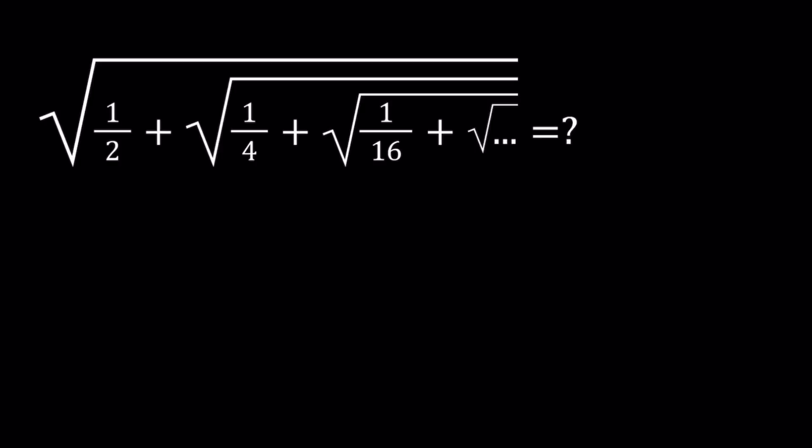Each term is squared. So we start with 1/2 and then we square it, we get 1/4, we square that again, 1/16. The next one is going to be 1 over 256, so on and so forth.